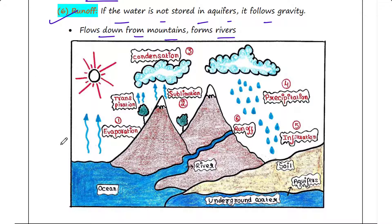We can see here the whole stuff: evaporation, transpiration, sublimation, condensation, precipitation, infiltration, and runoff. We can see all these processes here, and these water bodies are aquifers.